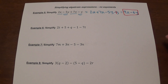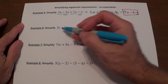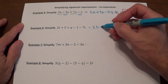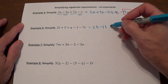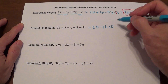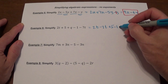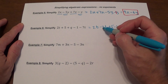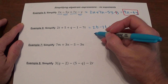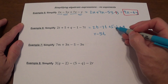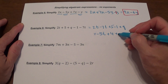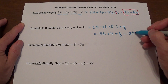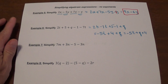Next problem: we have t terms, so 2t minus 7t, then constant terms plus 5 minus 1, and one lonely q. 2t minus 7t gives negative 5t. 5 minus 1 gives 4, and then plus q. This is an acceptable answer, although usually you put variables first and then the constant at the end. Then the next problem: 7m is the only m. We have plus 3n minus 3n minus 5. Positive 3n minus 3n cancels to give 0, so what remains is 7m minus 5.